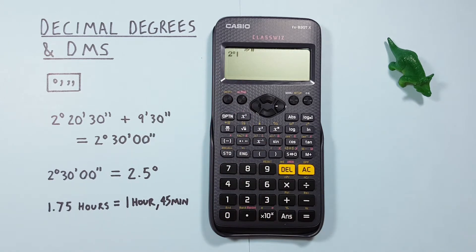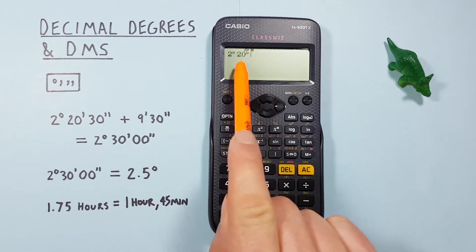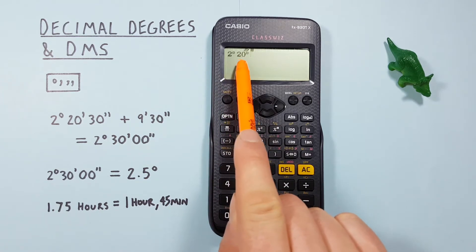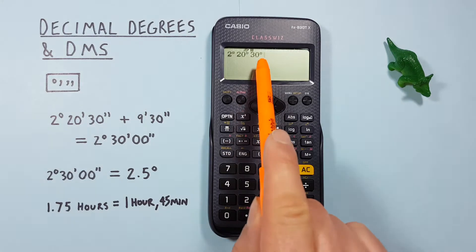And we see a degree symbol appear beside the 2. Next we enter the minutes, so that's 20, and press the degrees minutes seconds key again. And we see the degree symbol appear again beside the 20. And then the seconds which was 30, and then the degrees minutes seconds key. There we go.